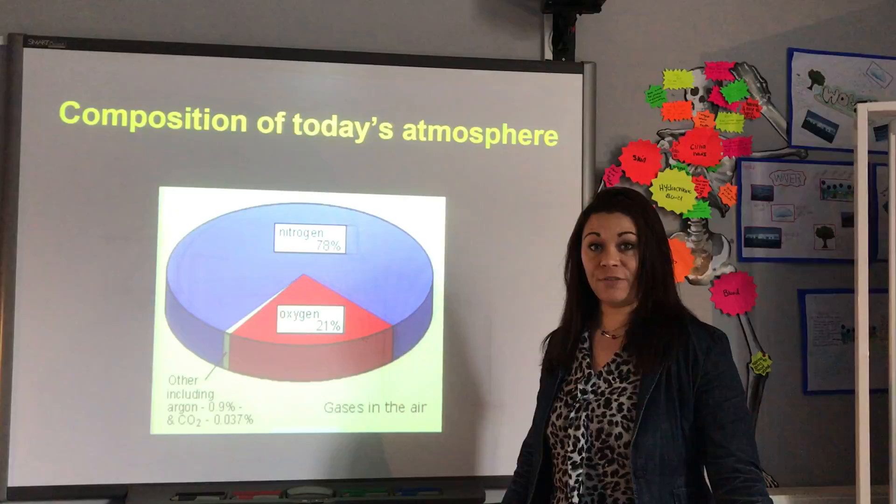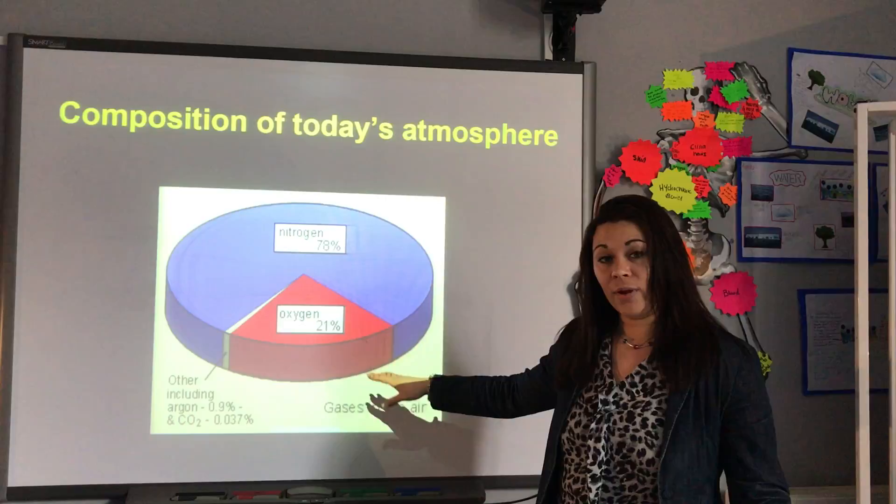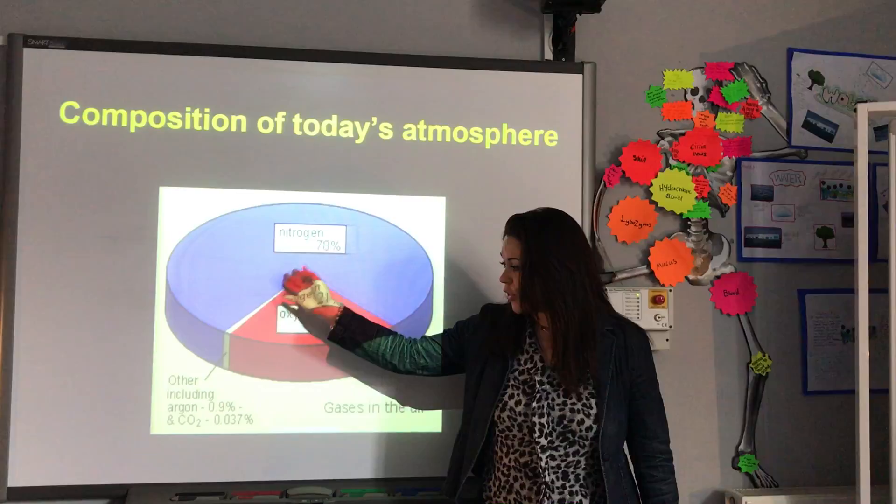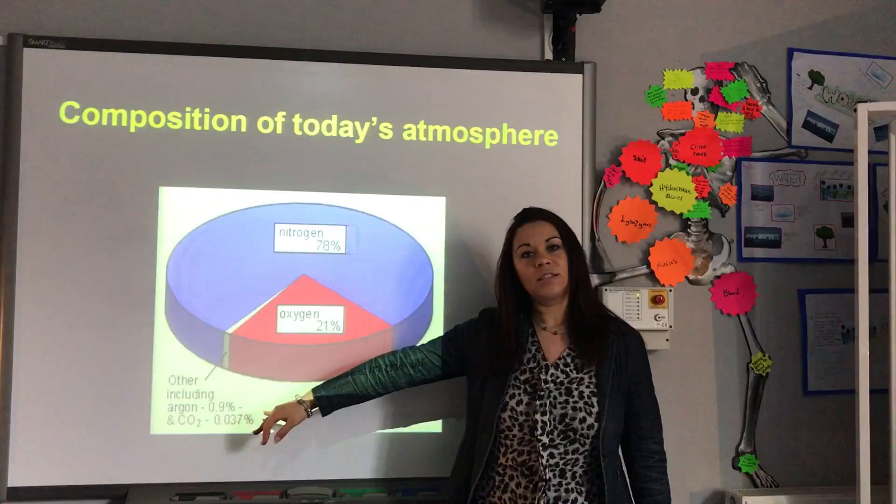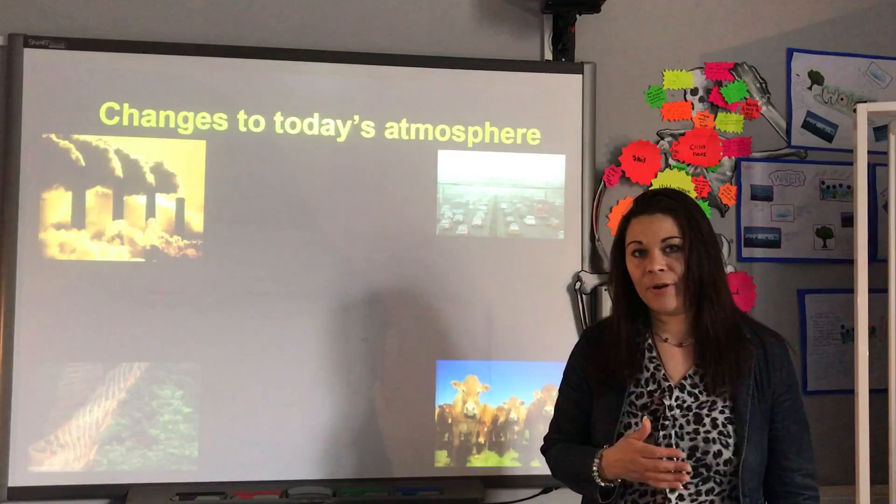We also need to understand the composition of the atmosphere today. The atmosphere is 78% nitrogen and 21% oxygen. There is such a small proportion of all the other gases that they are often included only as 'others' on a pie chart or graph. Argon is the next most abundant gas at 0.9%.